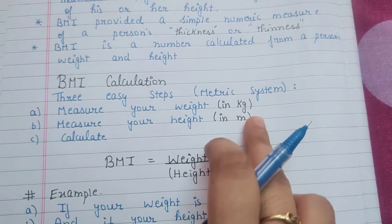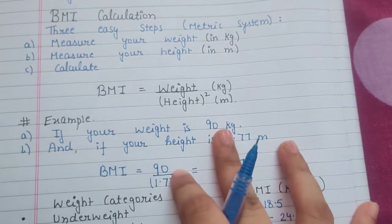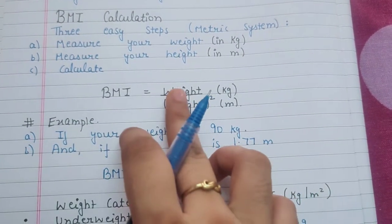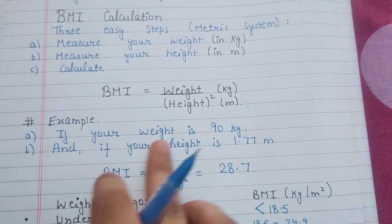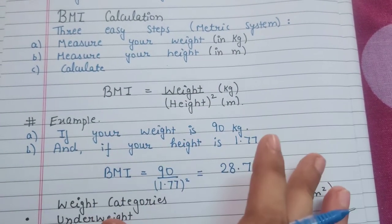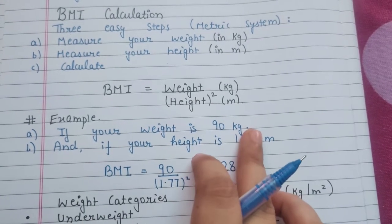BMI is equal to weight upon height square. The unit of weight is kg and unit of height is meter. Suppose I am giving you an example of a person whose weight is 90 kg and whose height is 1.77 meters.